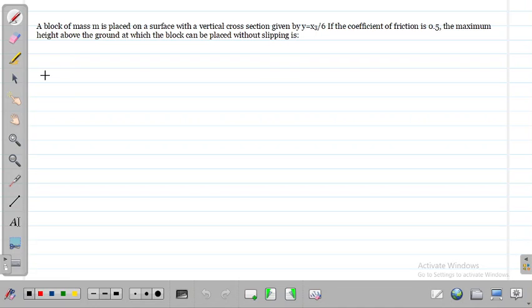The question: A block of mass m is placed on a surface with a vertical cross section given by y equals x cubed by 6. The coefficient of friction is 0.5. Find the maximum height above the ground at which the block can be placed without slipping.